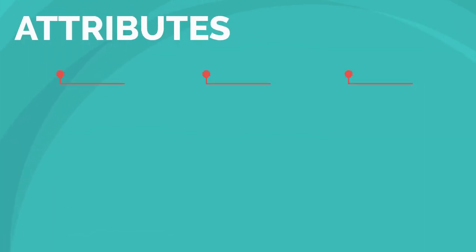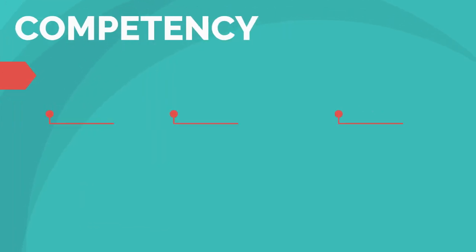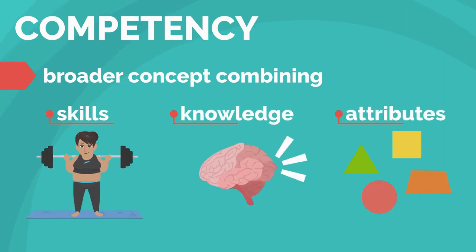Attributes are personal qualities that are expressed through what you think, do, and feel. A competency is a broader concept combining skills, knowledge, and attributes.